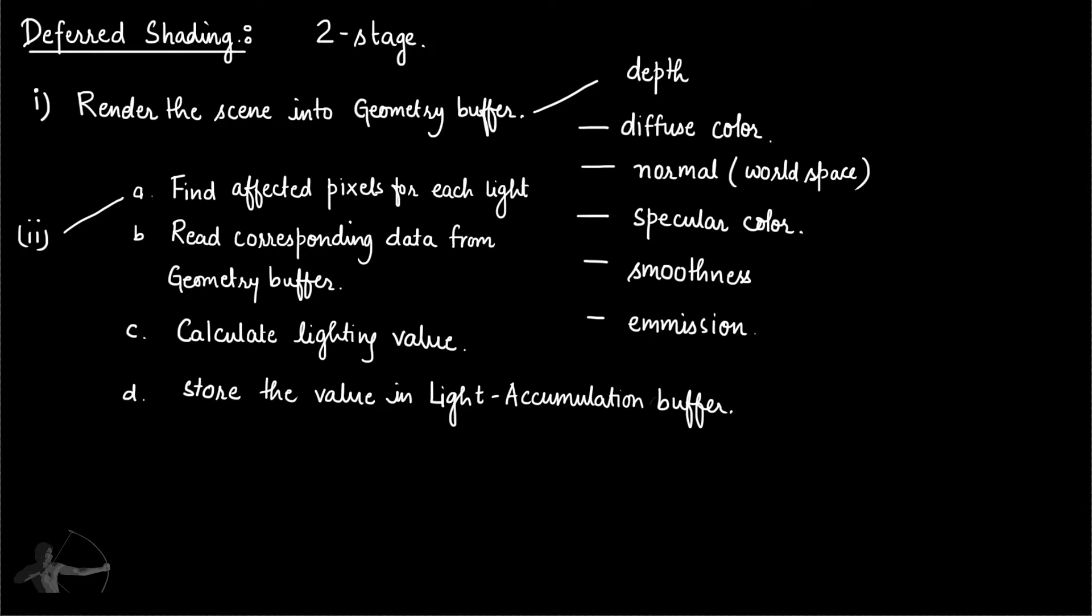These steps are very similar to what we saw in deferred lighting. The fifth step is to read the geometry buffer to find out the mesh color, which includes diffuse color, specular color, smoothness, and emissive, and add up the accumulated light value to get the final color of the pixel.